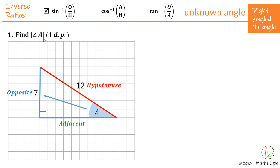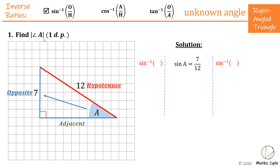Choosing the opposite and hypotenuse means we are going to use the sine ratio — sine inverse of opposite over hypotenuse. We build our solution starting with the sine of A equals 7 over 12. Now I have the sine of A, but what I really want is just A. To cancel out the sine part I need to use the reverse: sine inverse. Using the balancing method, I take sine inverse on both sides. Sine inverse cancels sine, leaving just A on the left and sine inverse of 7 over 12 on the right.